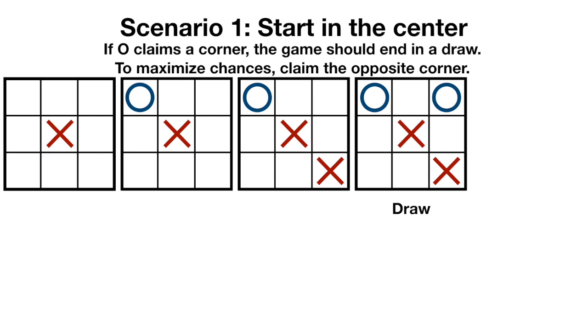However, if O claims a corner square, then the game will end in a draw, because x must defend against O's threat.